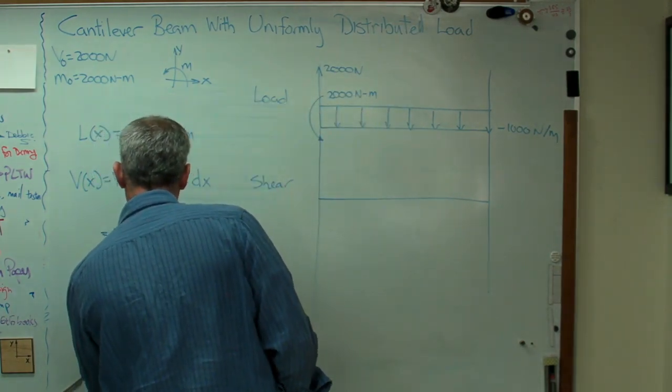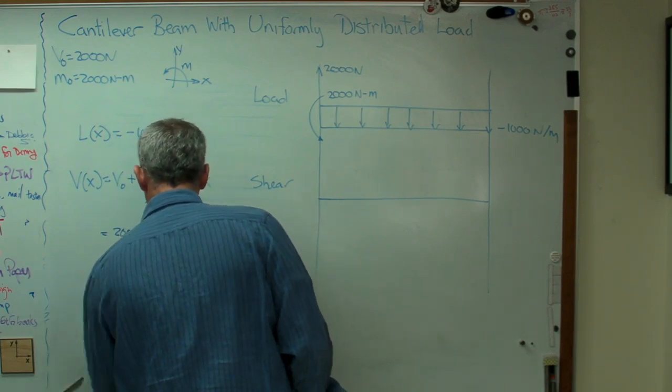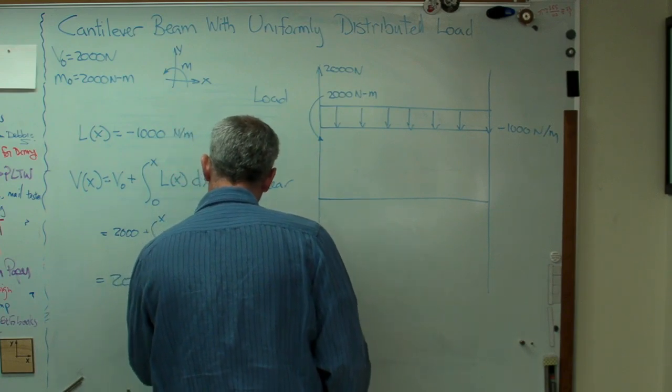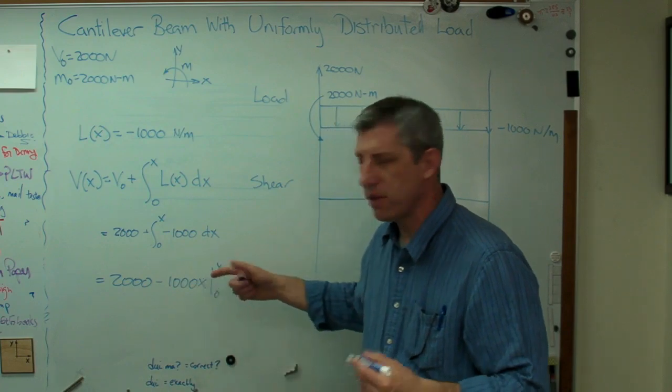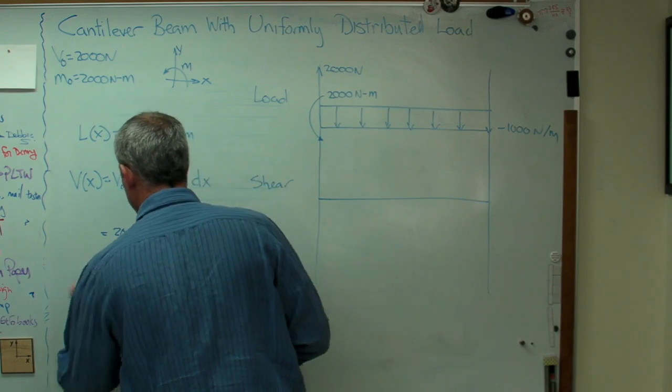So, this is 2,000 minus 1,000x evaluated from 0 to x. Well, that's 1,000x minus 1,000 times 0. So, that 0 pretty much just goes away. So, there's V of x.